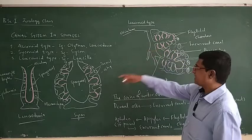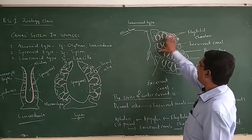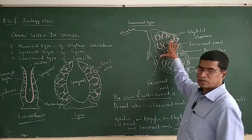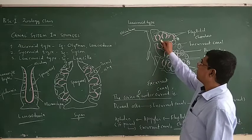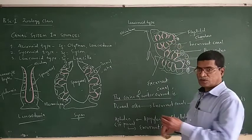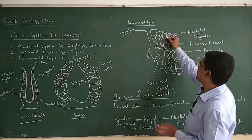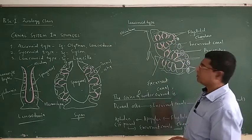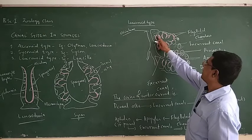Look here — the flagellated chambers are formed like this. The wall of the sponge is much thicker than in the syconoid type, and that thickness is because of the development of flagellated chambers. The flagellated chambers together form a bunch-like structure, and these flagellated chambers open into the excurrent canal. Flagellated chambers are connected to the exterior through the incurrent canal, which opens to the exterior through the excurrent canal.